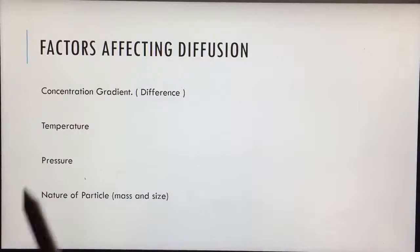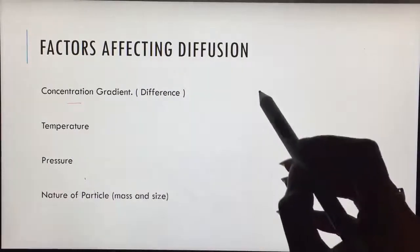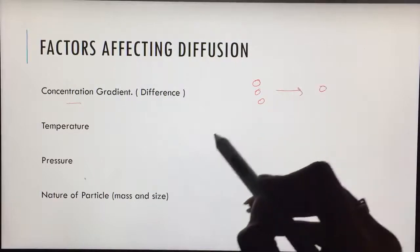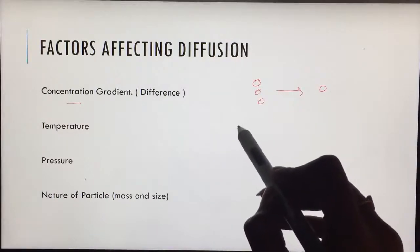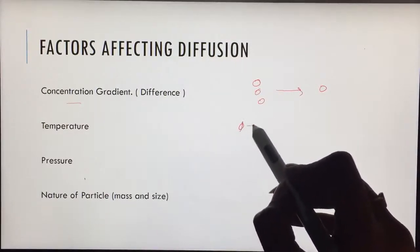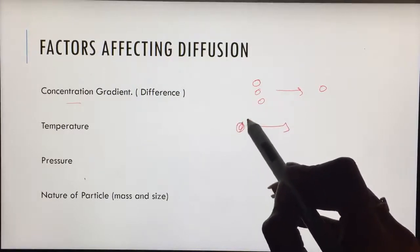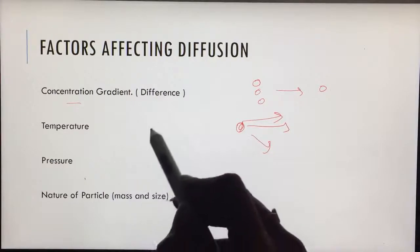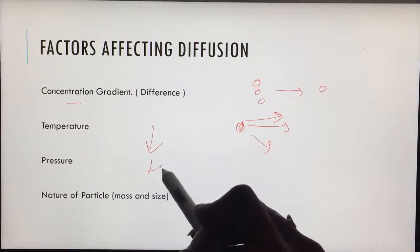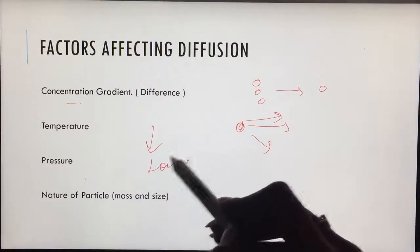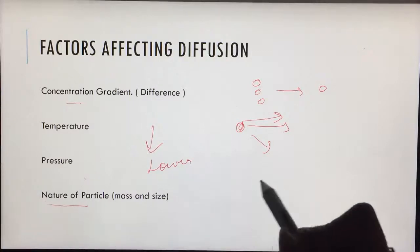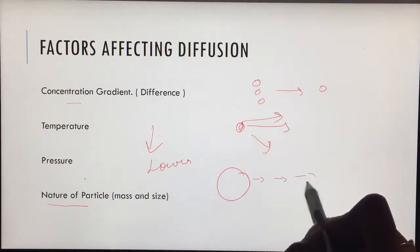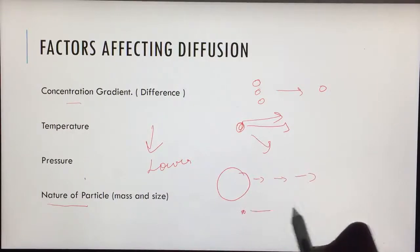Factors affecting diffusion are the concentration gradients. The movement would be from higher concentration particles to the region of lower concentration. If the temperature is higher, the mobility would be more. The molecules would be having a lot of energy and they would be going in many directions. If pressure is high, the movement would be lower. And it depends on the nature of the particle. If the particle is big in size, the movement would be slow. If the particle is smaller in size, it would move more quickly.